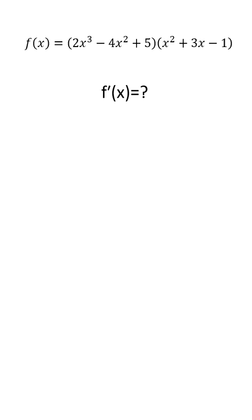What happens when we want to find the derivative of the product of two functions? Let's see how the product rule works step by step.